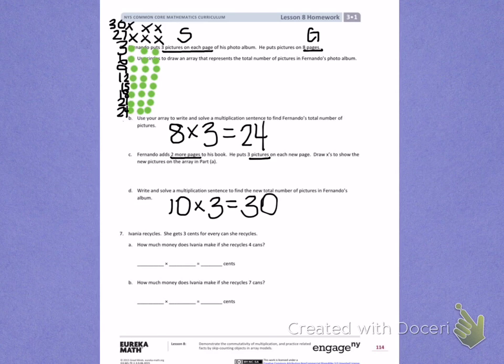Number seven. Aviana recycles. She gets three cents for every can she recycles.